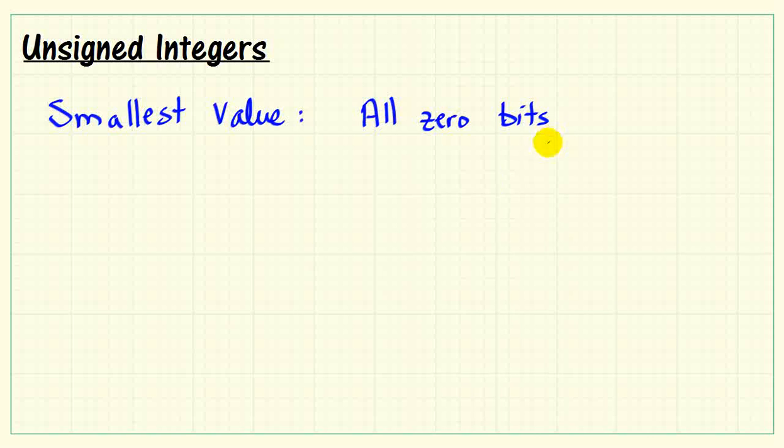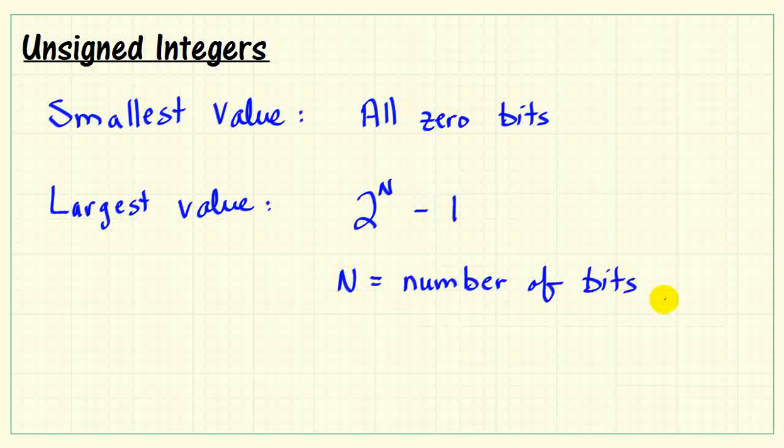It's interesting to note that the smallest value we can represent is 0 with all 0 bits. The largest value would be 2 raised to the power n minus 1, where n equals the number of bits.